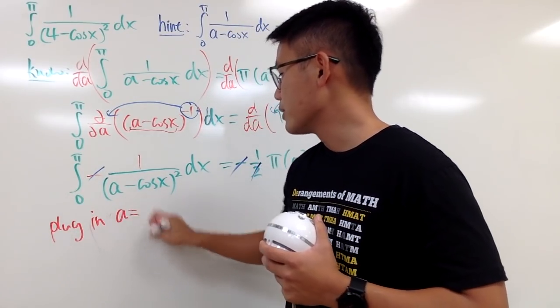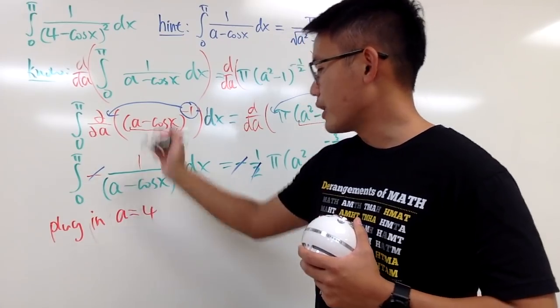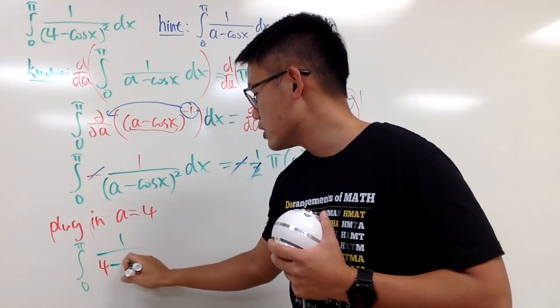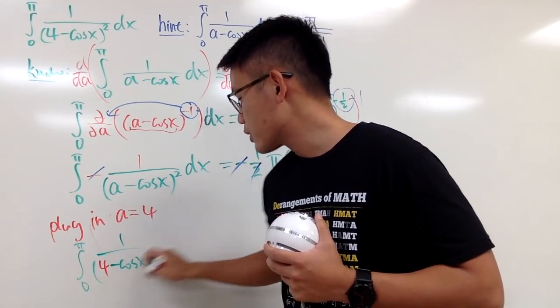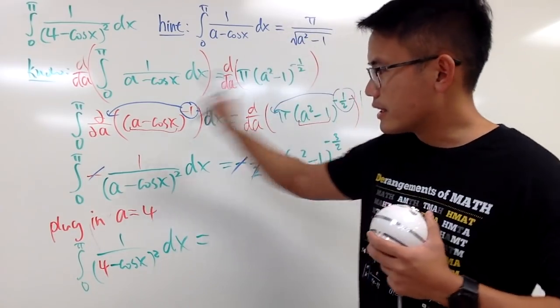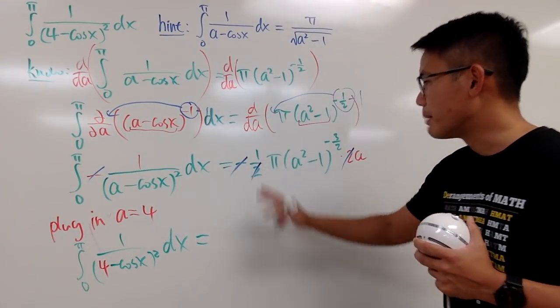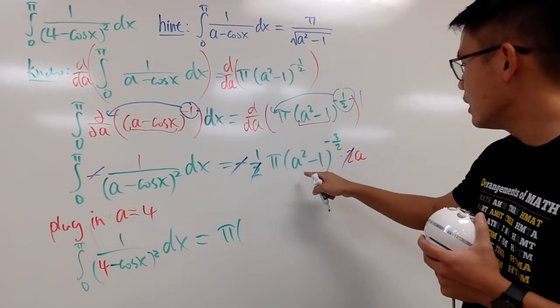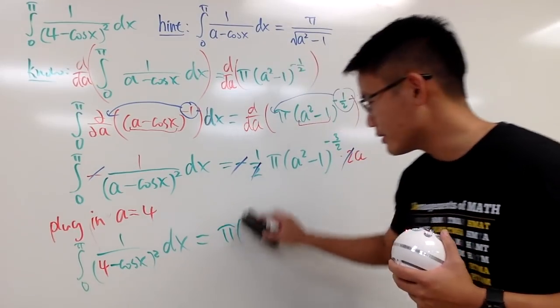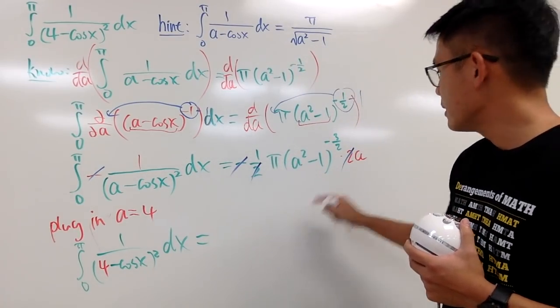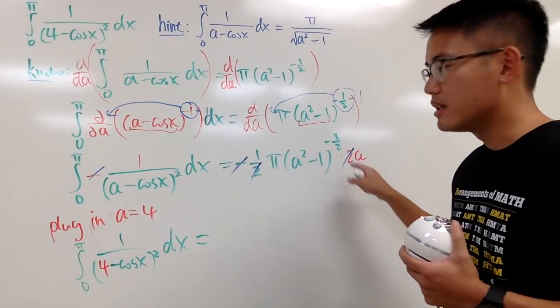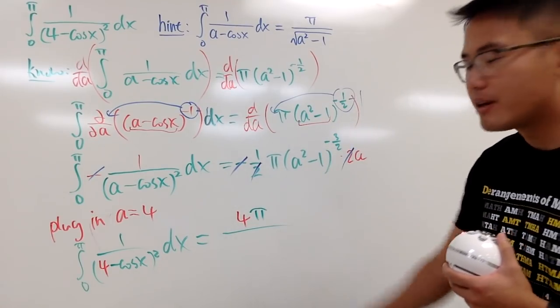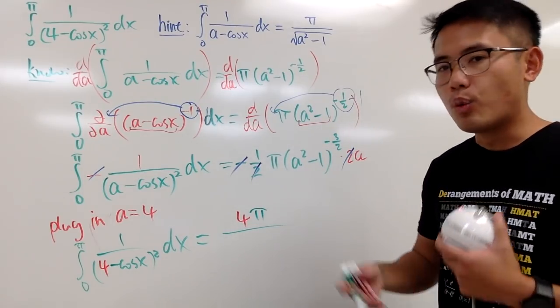That's it, right? Plug in a equals to 4. So, right here, you see, integral from 0 to pi of 1 over (4 minus cos x), and then square, and then the dx. Once again, I divided by negative on both sides already. So, right here, we get positive. We get pi, or pi times, and perhaps I will just write everything as a fraction, like this. So, I have pi on the top, a on the top. a is 4, so I have 4 pi, like that, over, bring this down to the denominator.